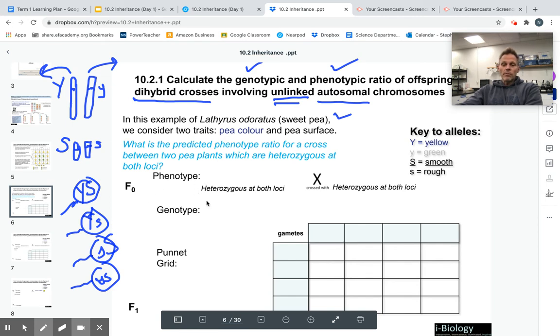So that means when we write the genotypes, one plant is going to be big Y, little y. That's heterozygous. And also big S, little s for texture.